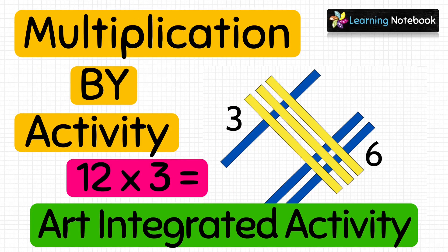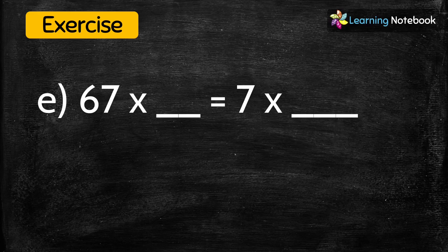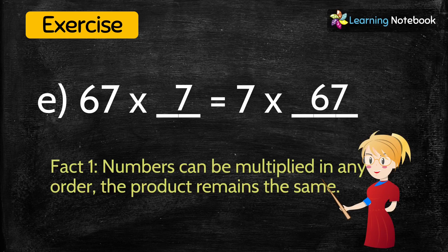If you want to learn multiplication with the help of a creative and interesting activity, I would recommend you watch this video — the link is below in the description box. Now the next question: 67 multiplied by blank equals 7 multiplied by blank. The answer to the first blank is 7 and the answer to the second blank is 67, because numbers can be multiplied in any order and their product remains the same.